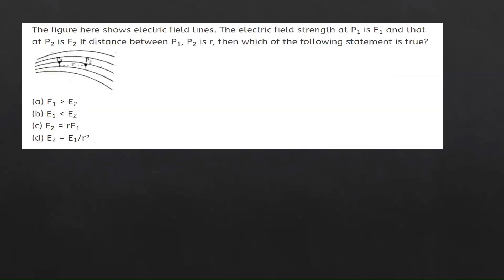The last question: a figure shows electric field lines where the field strength at point P1 is E1 and at point P2 is E2. The options are: E1 > E2, E1 < E2, E2 = r·E1, or E2 = E1/r². The answer depends on the density of electric field lines — where lines are closer together the field is stronger.